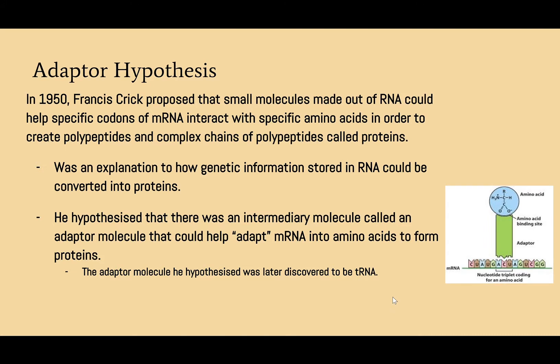In 1950, Francis Crick developed the adapter hypothesis, which proposed that small molecules made out of RNA could help specific codons of mRNA interact with specific amino acids in order to create polypeptides and complex chains of polypeptides called proteins. It was an explanation of how genetic information stored in RNA could be converted into proteins. He hypothesized that there was an intermediary molecule called the adapter molecule that could help adapt mRNA into amino acids to form proteins.